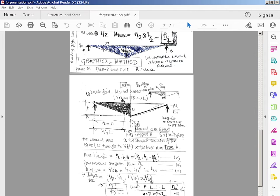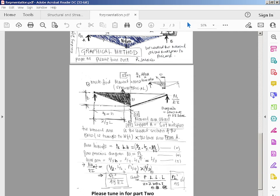The deflection is the moment of the area. It equals half times L over 2 times PL over 4 - that's the area - and then times L over 3. So that gives you P times L times L times L.